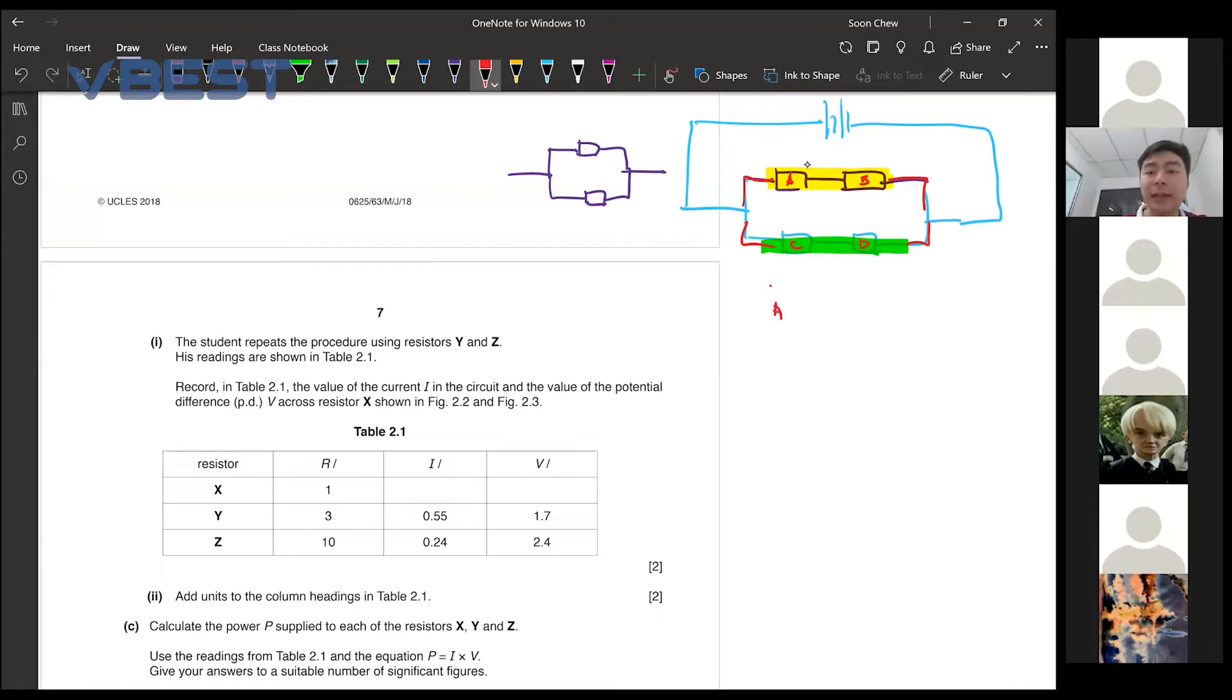So A and B, they are in series. Then C and D, also in series. But then when we talk about A, B and C, D, right? Both of them are in parallel.